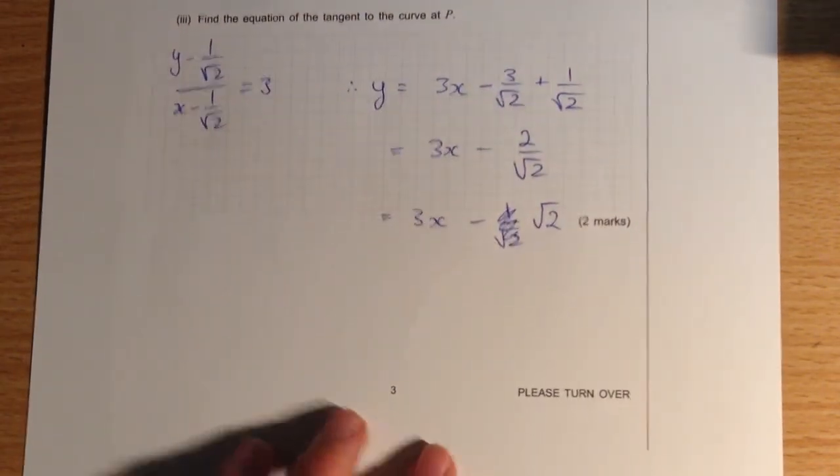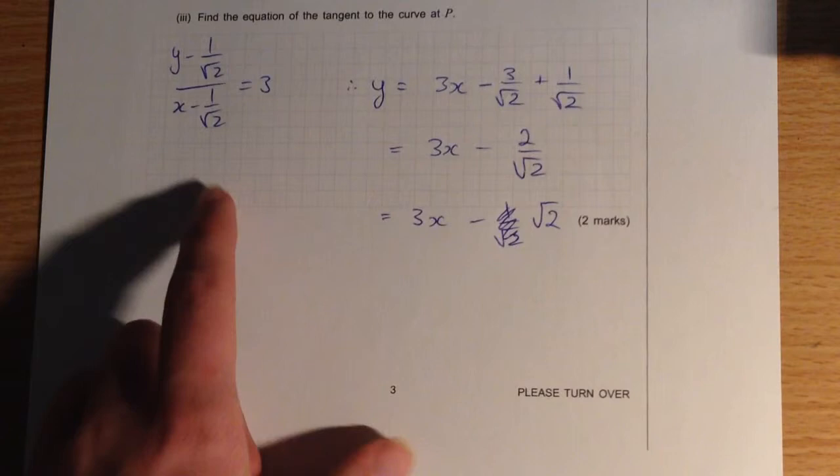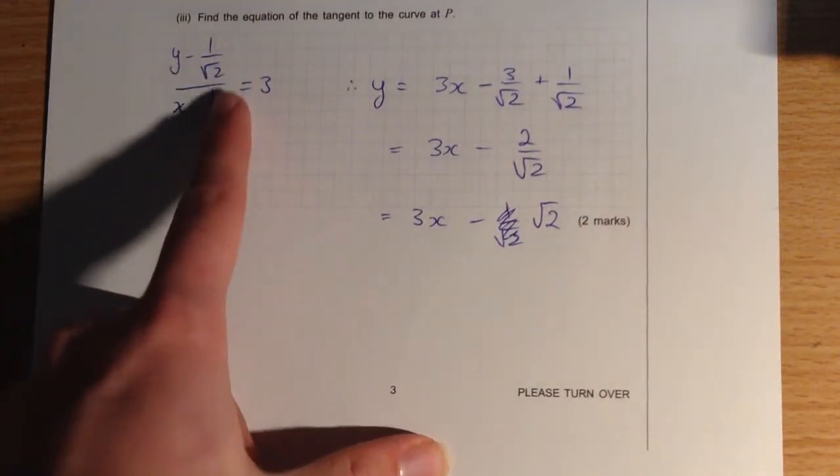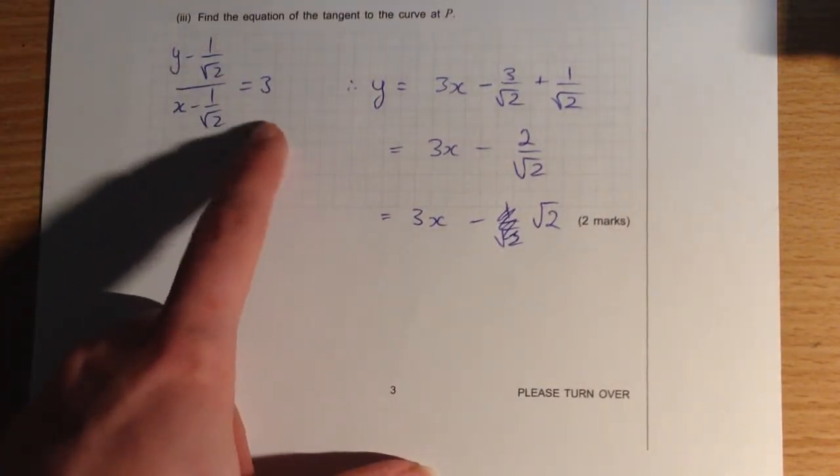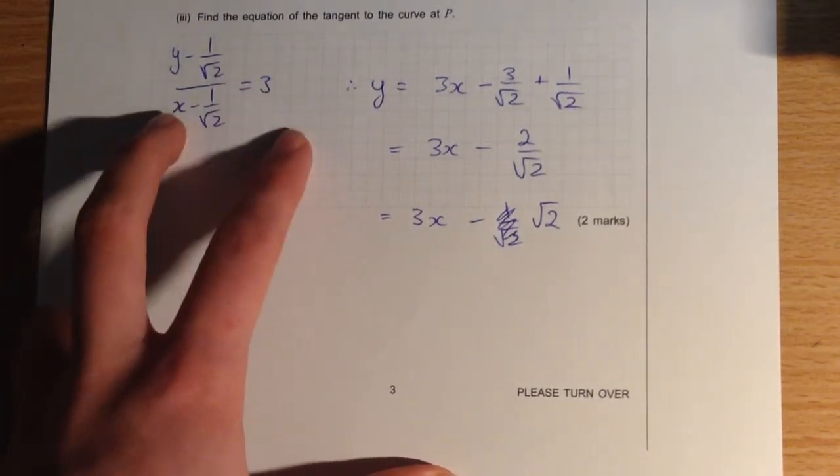Now for the last part, which is worth 2 marks, which is pretty much the largest allocation for this question, because it's a very straightforward question, a really easy opener to the exam. What we do is we have y take the y coordinate we identified, and x take the x coordinate that we identified, equal to the slope. We can now rearrange this.